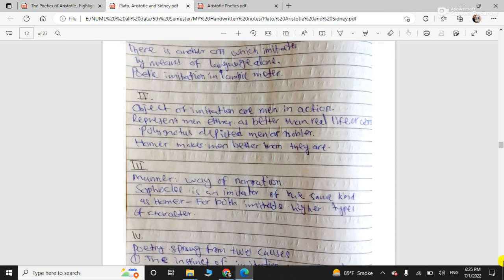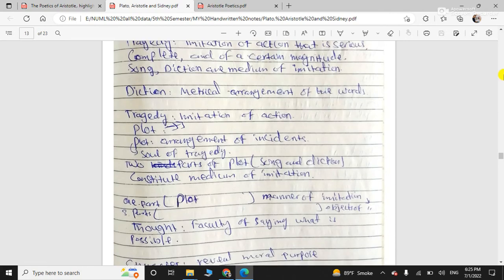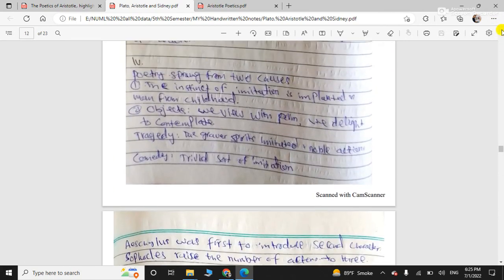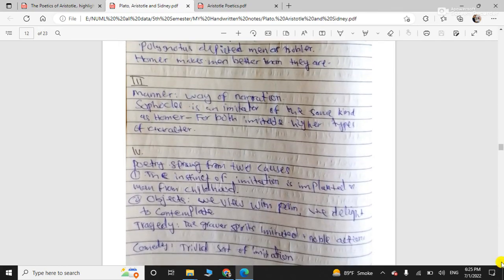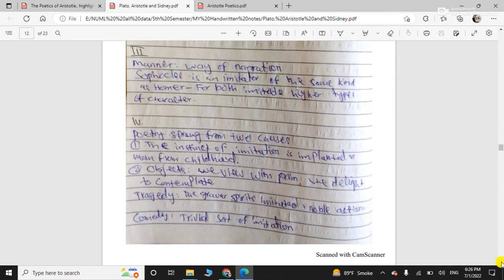Then he says, the object of imitation, how should it be? Objects of imitation are men in action. Men in action. Remember this thing. And then manner, how should it be? Manner is the way of narration. After manner, he discusses that poetry springs from two causes. What are they? The instinct of imitation. And the objects with the view that which gives delight. We delight to contemplate it.